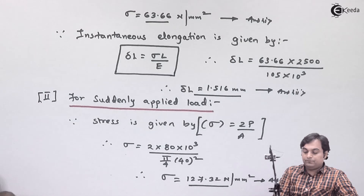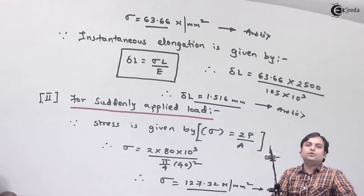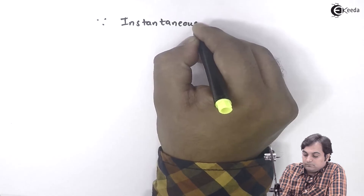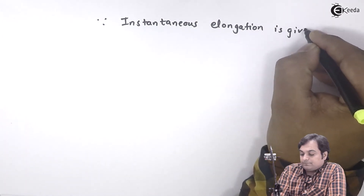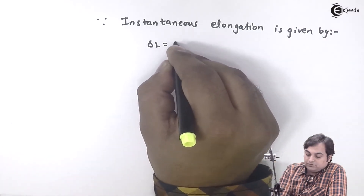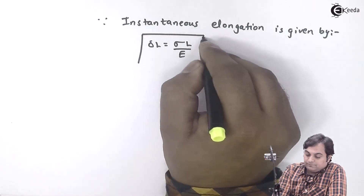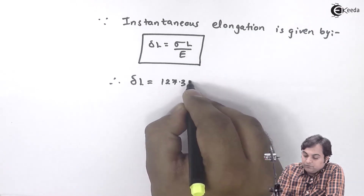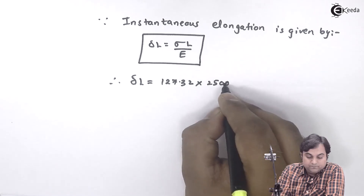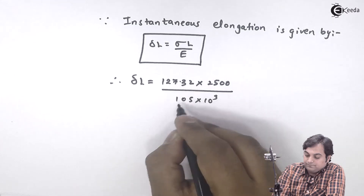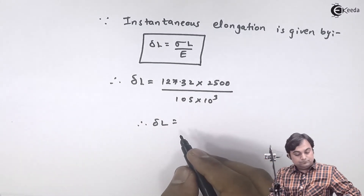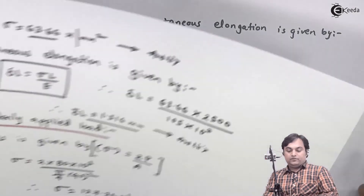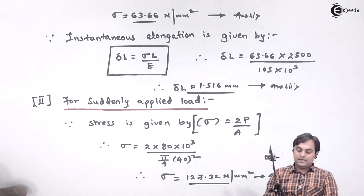After getting stress for suddenly applied load, we calculate instantaneous elongation. Since instantaneous elongation is given by Delta L equal to stress into L upon Young's modulus, therefore Delta L equals 127.32 into 2500 divided by 105 into 10 raised to 3. The deflection answer is 3.03 mm.